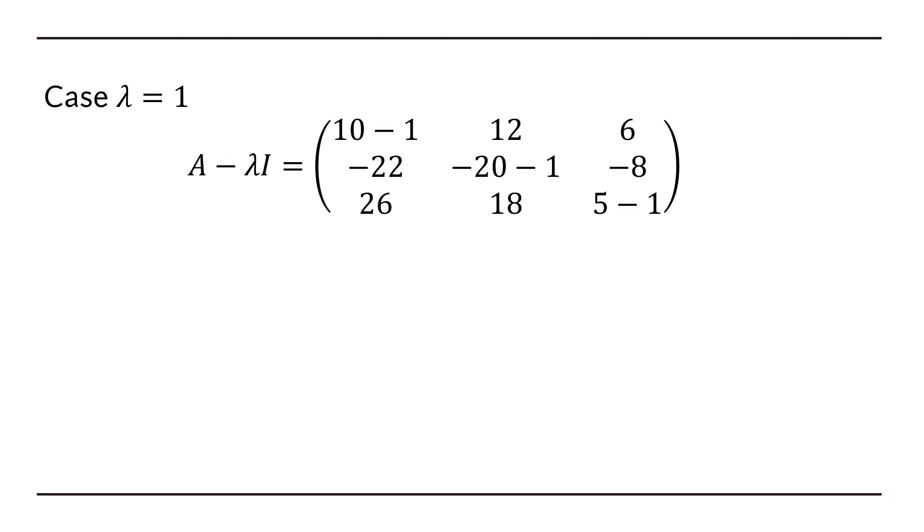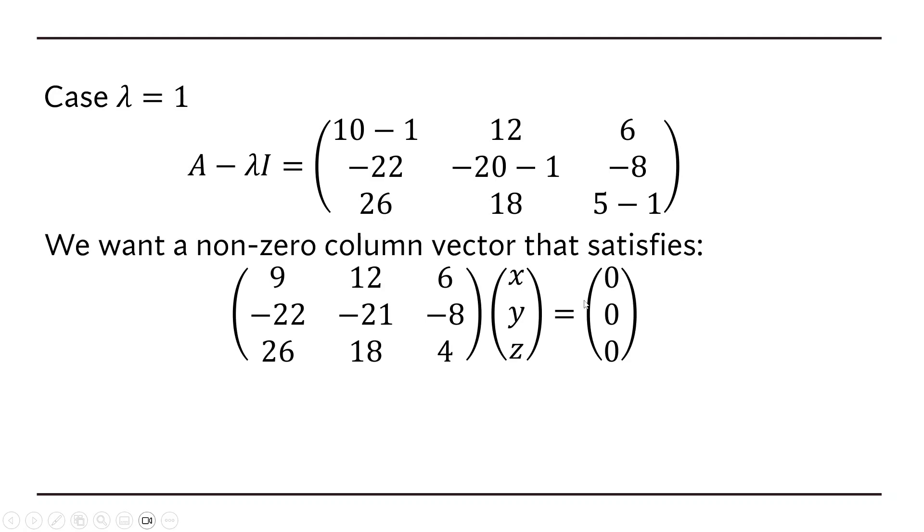So let's now move on. For the first case, lambda equals to 1, the A minus lambda I will be this. And the equation for the eigenvector is that A minus lambda I times the vector has to give you the zero vector. You're looking for a non-zero column vector x, y, z that satisfies this equation. If this equation is satisfied, then that column vector that you have is called an eigenvector for the given eigenvalue.